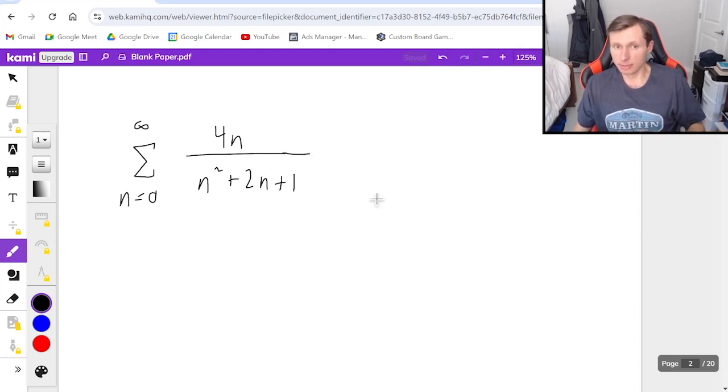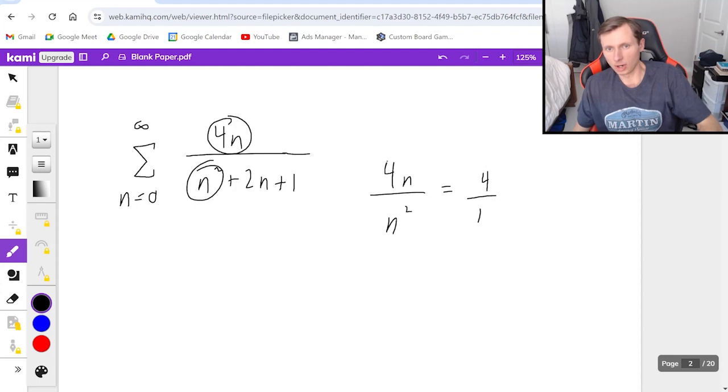So if I want to use limit comparison test here, first I have to compare it to something. My advice is, look at the leading terms, like 4n and n squared. So like 4n divided by n squared is really just 4 over n, and this is what you should compare it to.